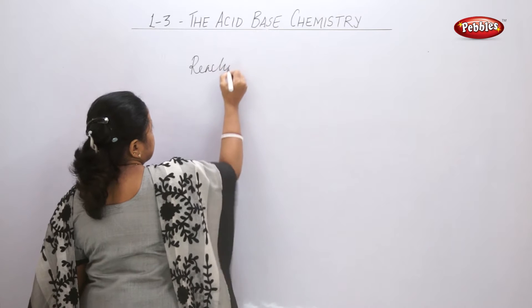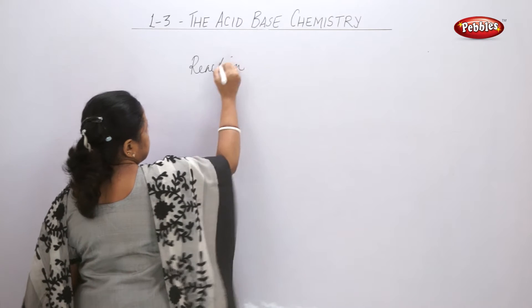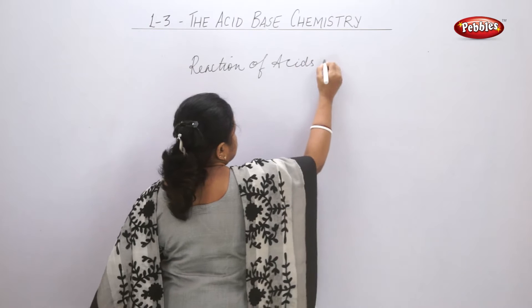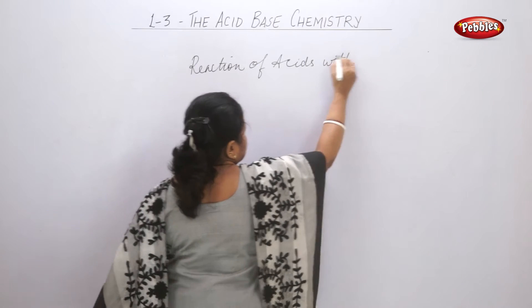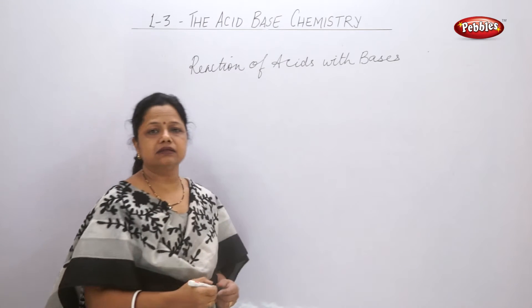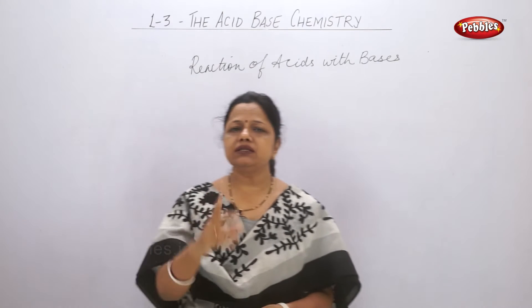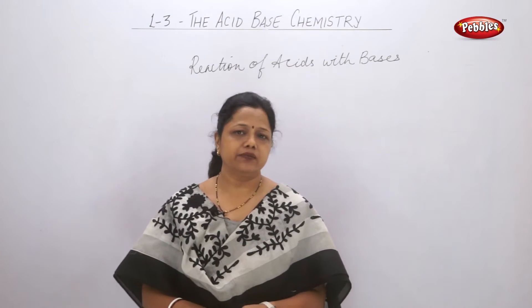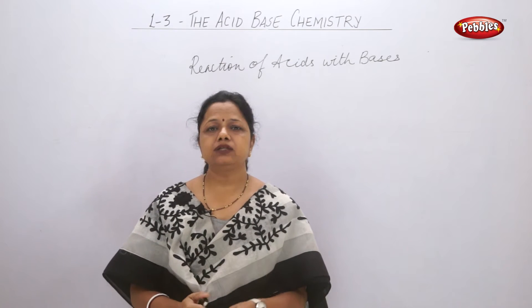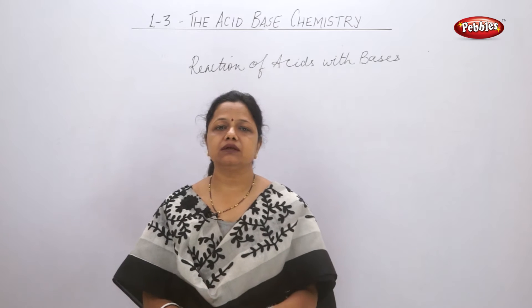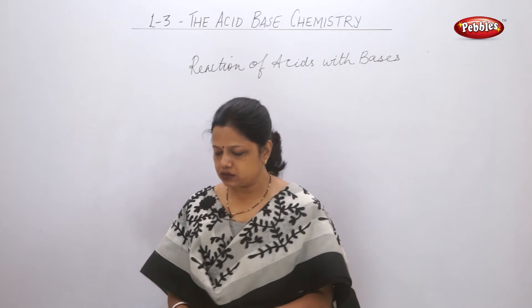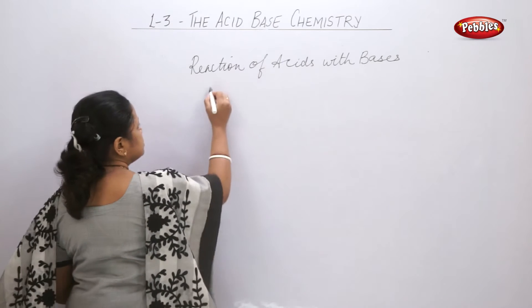Reaction of Acids and Bases. When an acid reacts with a base, what is the general tendency? The general tendency is to neutralize each other — to remove the effect of each other by formation of salt and water. So this reaction is called a neutralization reaction.